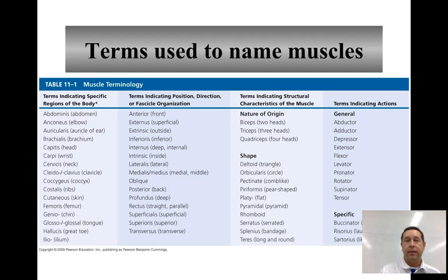There are also terms that indicate structural characteristics — for example, biceps means two heads, triceps means three heads, and so on. Shape of the muscle is another naming factor: if it's triangular it may be called deltoid, if it's pyramid-shaped it's pyramidal, things like that.